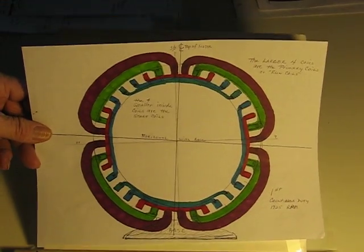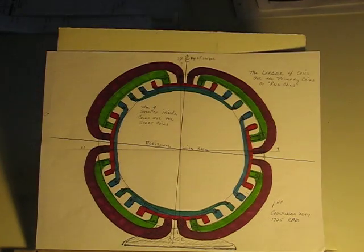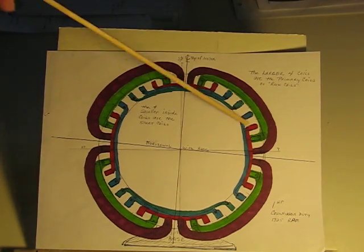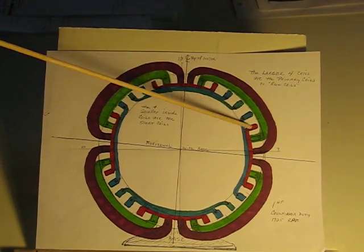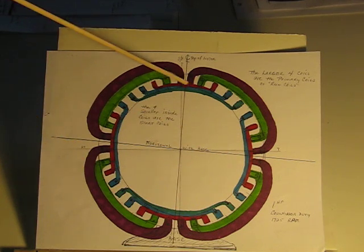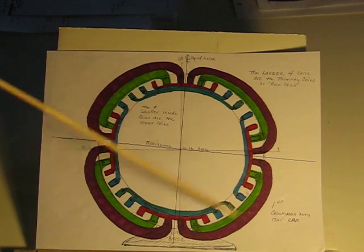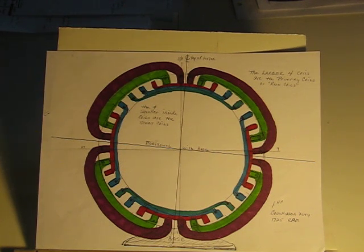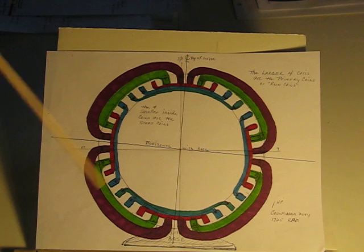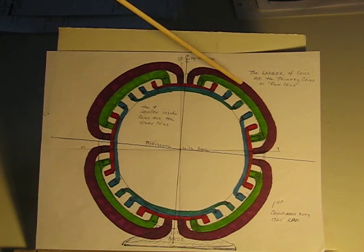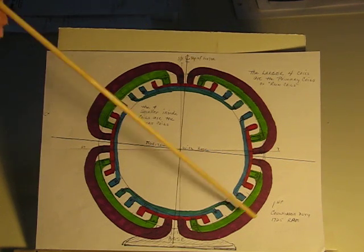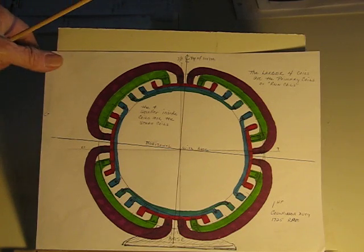This here was the field coils. The little one, the red one, was the start coils. So if you look in your motor, you'll see some small windings. Those will be your start windings. You don't want to mess with them. You want to mess with the wires coming off the main field. In this case, there's four of them, but they will be wired together.